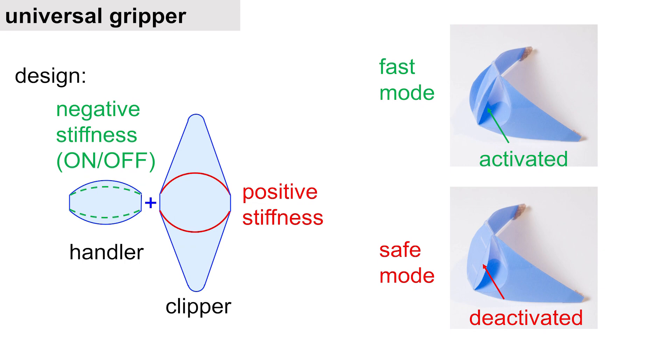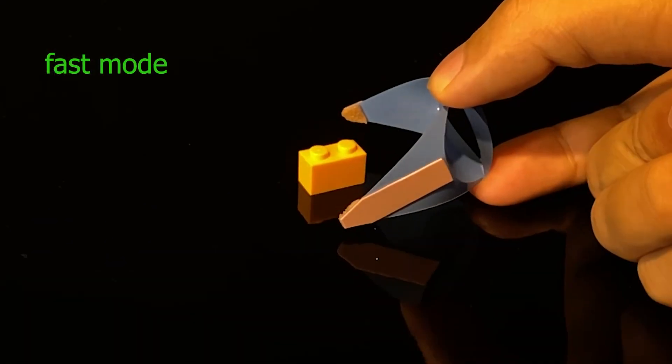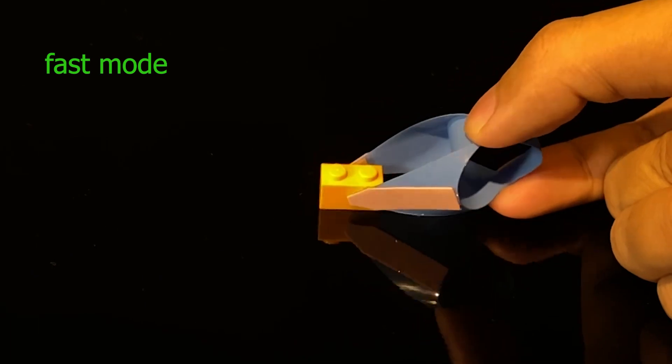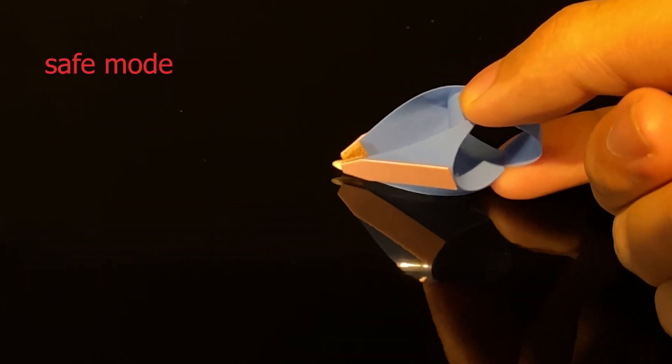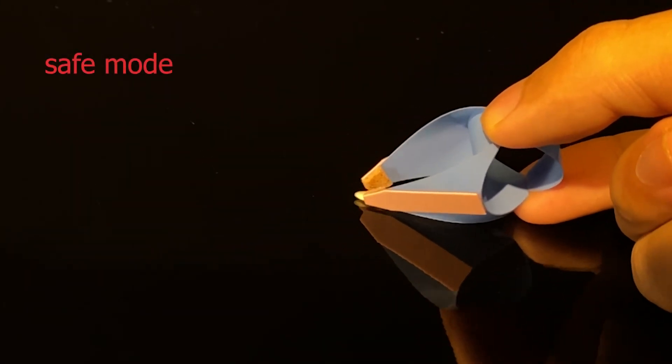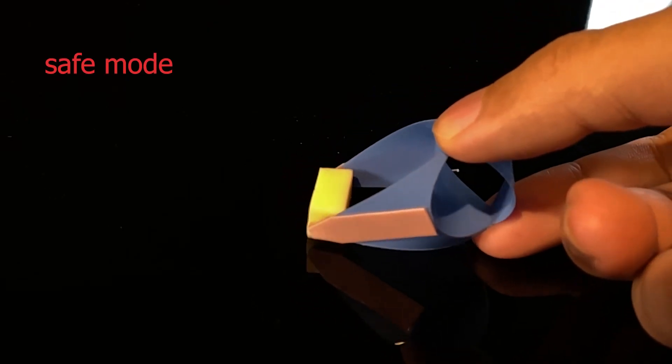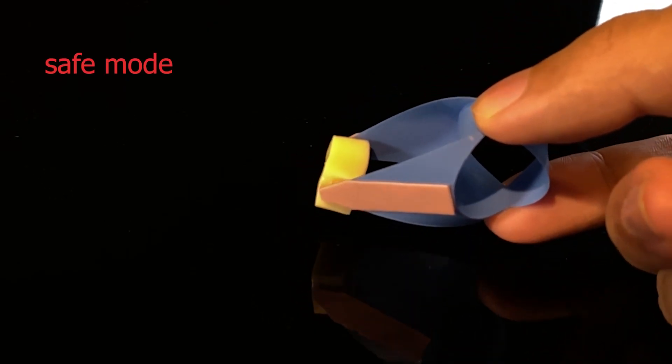Using the curved origami principle, we first designed a universal gripper with two modes. With the negative stiffness mode, we can grip objects as fast as several milliseconds, but it may fail in some cases. With the positive stiffness mode, we can grip tiny and fragile objects precisely and safely.